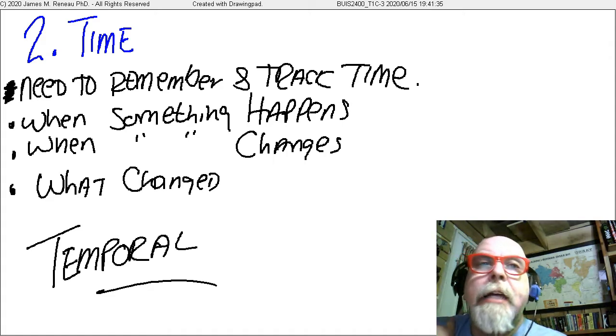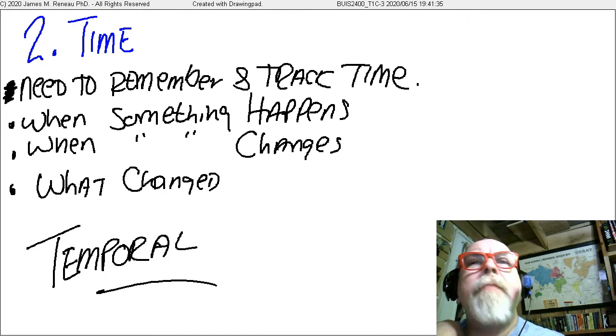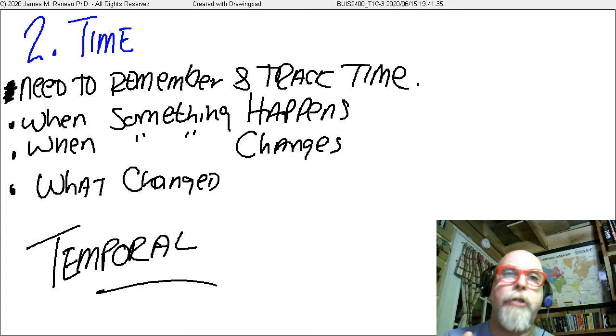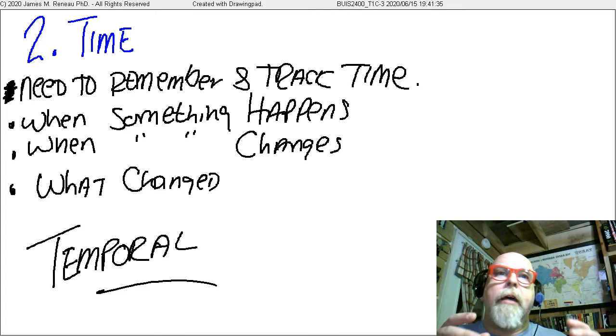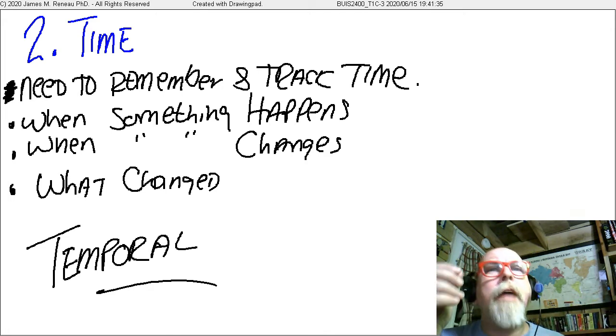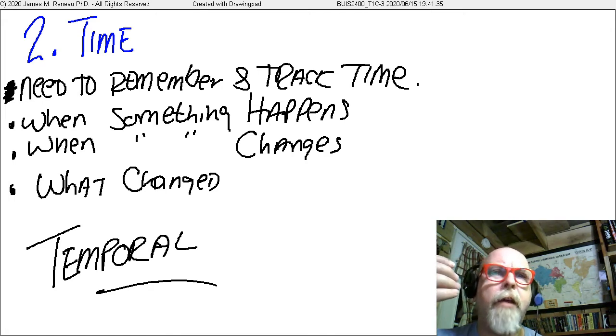Another thing a data model needs to take into account is the time of the data model. What I mean by the time, I mean data is temporal in nature. It has a time that it exists, a time that it was created. So our data model needs to be sure to include all of the ideas of time. Are we looking at a data model of the data today? Are we looking at a historical data model? Are we looking at a future data model? Are we trying to model all the future data that's going to be coming in? So our data model needs to take that into account, plus our data model needs to remember and track the time of events, of happenings, of changes, of all of that also.